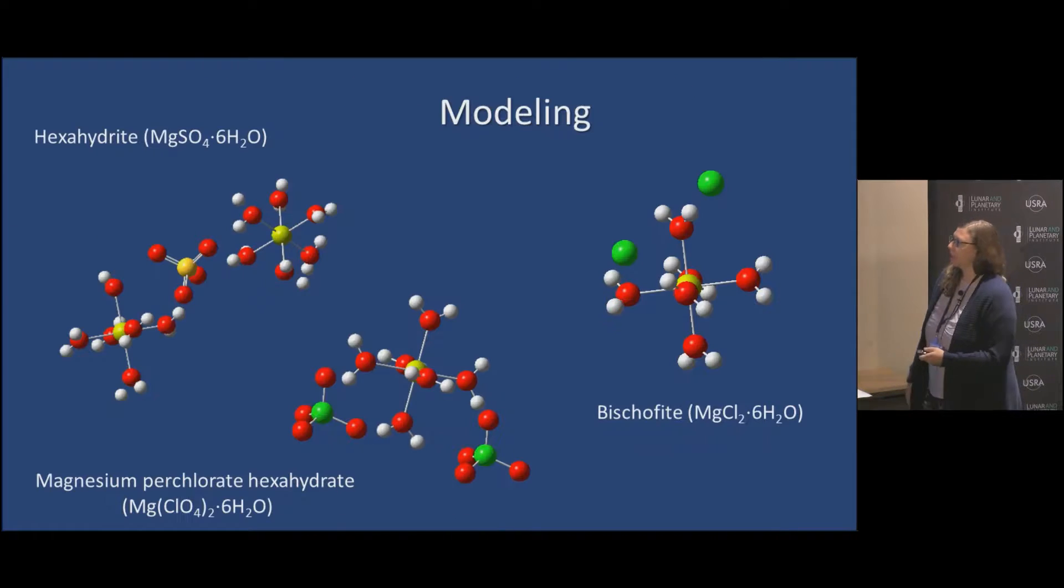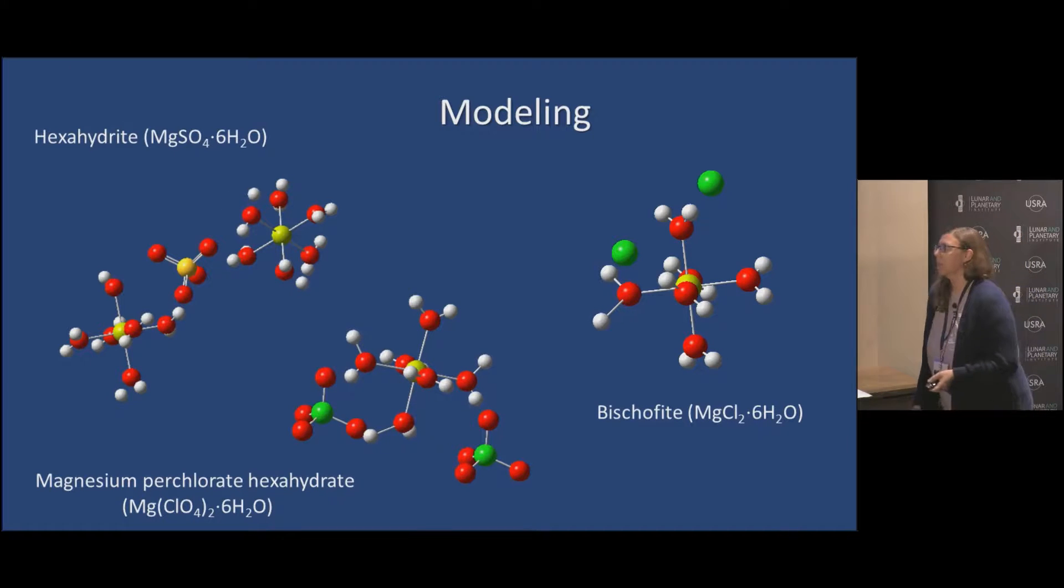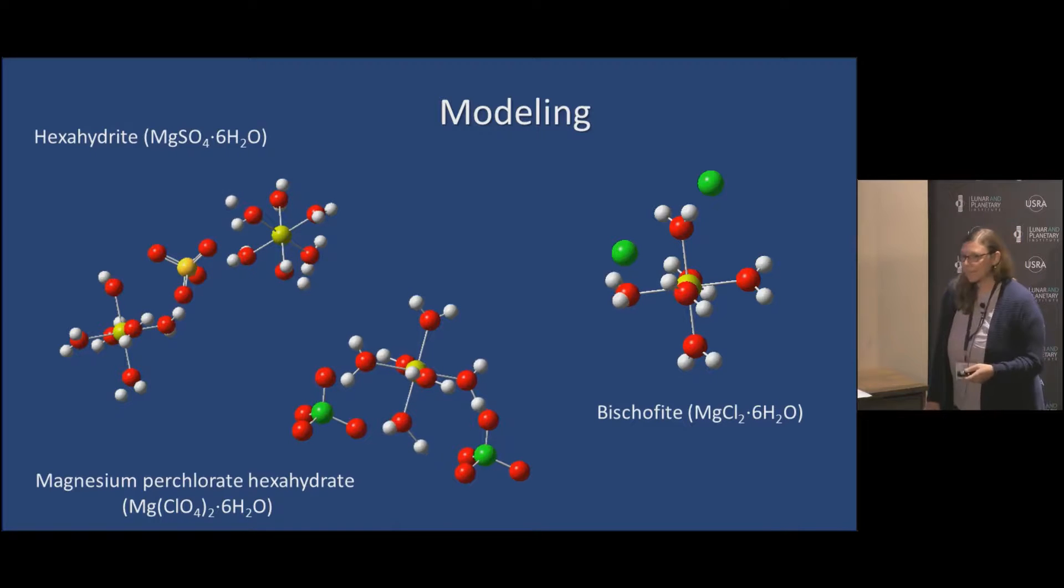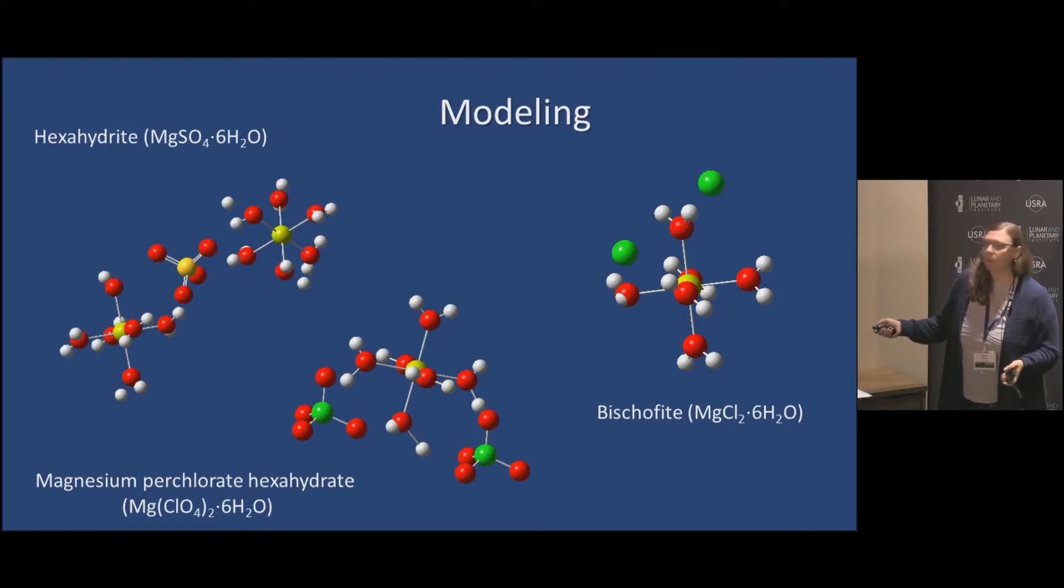You see these structures are actually dependent on the cation, the magnesium or calcium, and water. If you actually start looking at the structure of these, I started working with a group in the chemistry department at Northern Arizona University. We are trying to understand and predict where the vibrational modes will actually occur. Here's just a gif of each of them: hexahydrite magnesium sulfate 6H2O, magnesium perchlorate 6H2O, and magnesium chloride 6H2O.